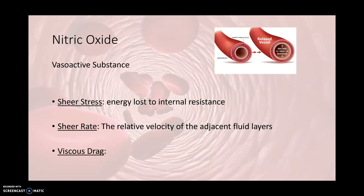The energy lost due to shear stress will be in the form of pressure, because the amount of pressure at one end of the vessel will be different than at the opposite end. The greater that pressure drop is, the greater resistance that tube offers. If we take pressure at one end of the tube and then at the other end, the greater the drop from beginning to end shows how much resistance that vessel is offering. A greater drop in pressure means a greater amount of resistance, and that all relates back to shear stress, which is energy lost to internal resistance.